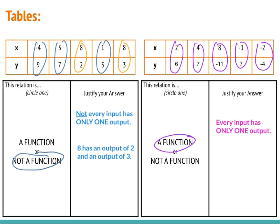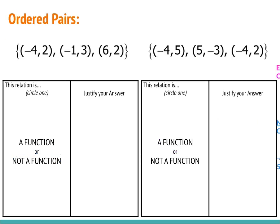Now let's take a look at an example with ordered pairs. Here we have two sets of ordered pairs. We need to determine which one is a function and justify our answers. Looking at our first ordered pair, every x has only one y: negative 4 has only one y, which is 2; negative 1 has only one y, which is 3; and 6 has only one y, which is 2.